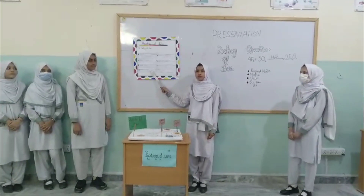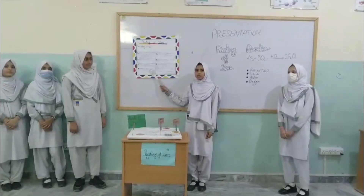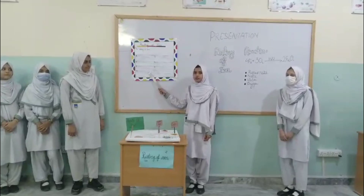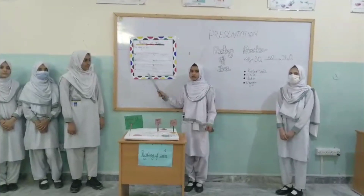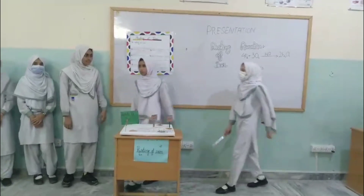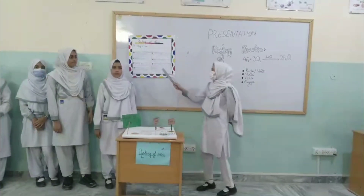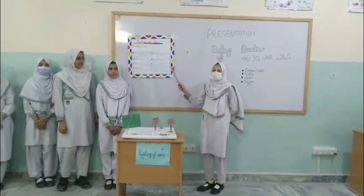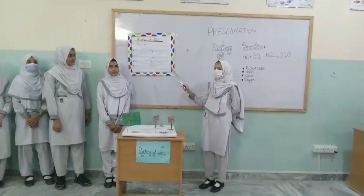The rust forms a thick layer over the surface of the iron. Point number 6: Acceleration of rust.